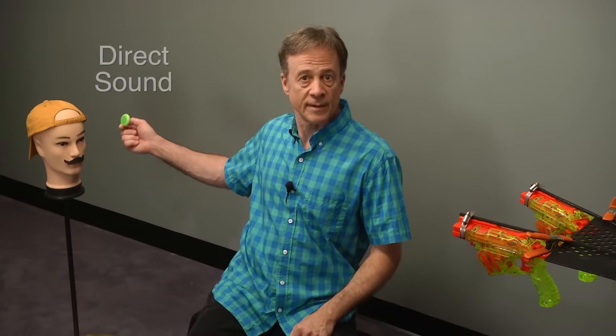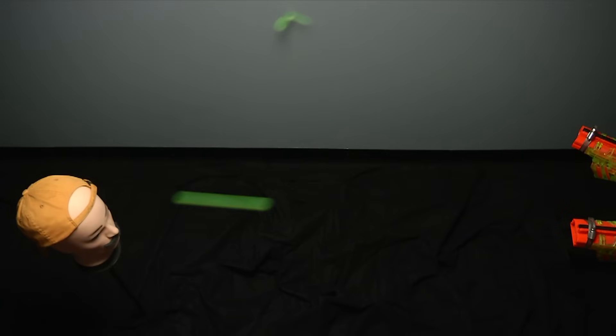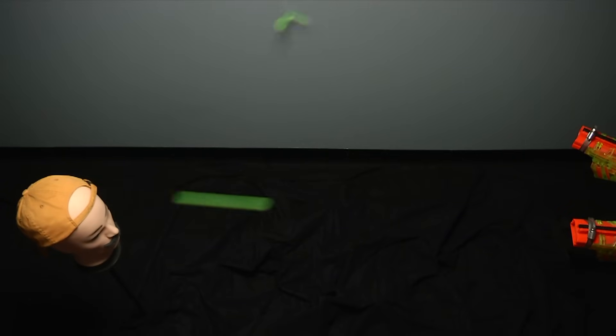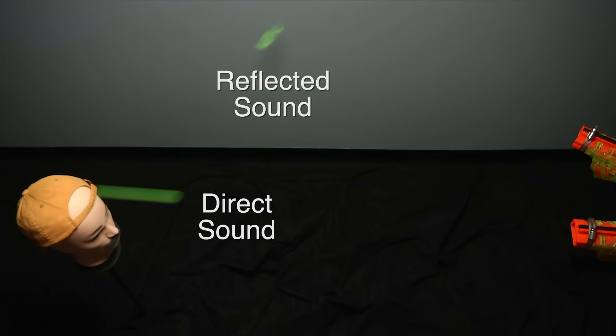Most rooms have flat walls and flat ceilings, and sound bounces off of these. I'll use these two Nerf guns to demonstrate. I've got this one aimed so this disc goes directly to the ear — that represents direct sound. I've got this one aimed so that disc bounces off the wall, and it represents reflected sound. I'll shoot them both at the same time. Reflected sound arrives at our ears later than direct sound, even though it started out at the same time, because it's traveling farther.